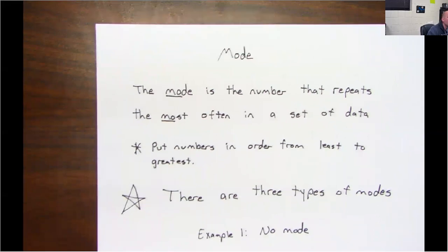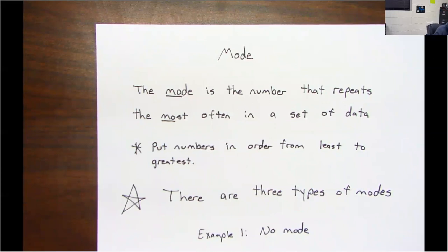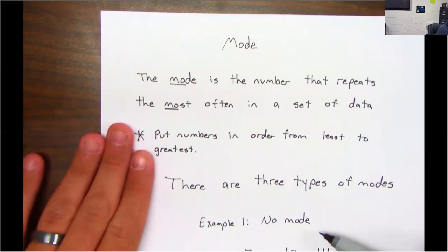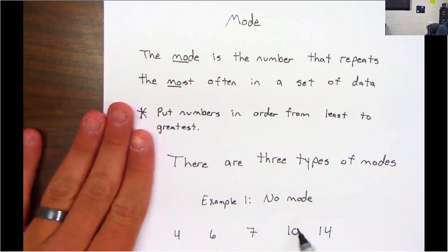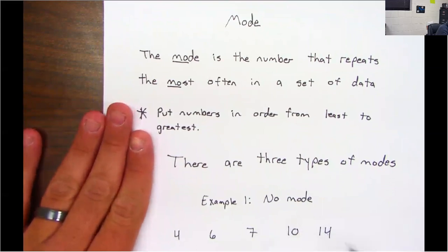The mode is the number that repeats the most often in a set of data. Please remember to put the numbers in order from least to greatest. There is one catch, guys — there are three types of modes. The first one is no mode.